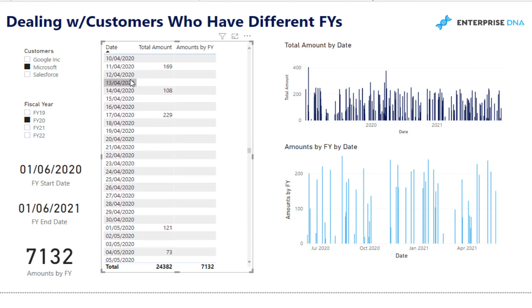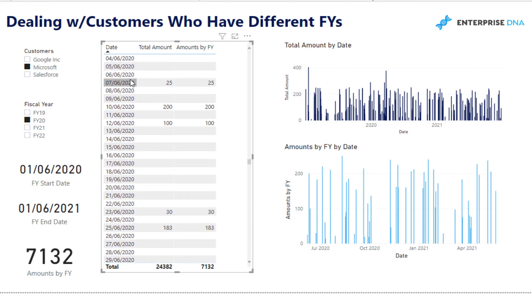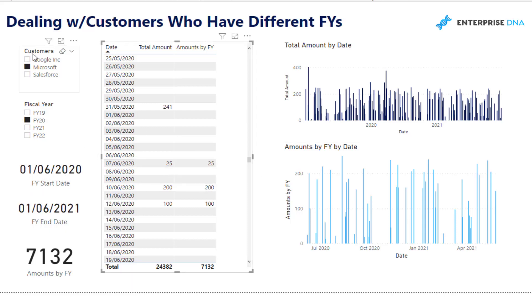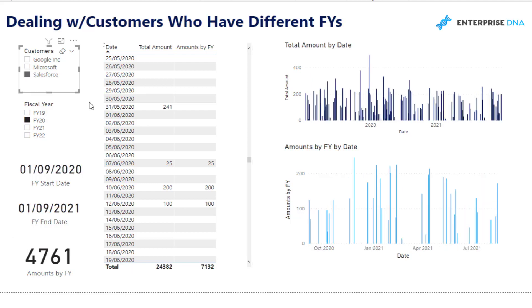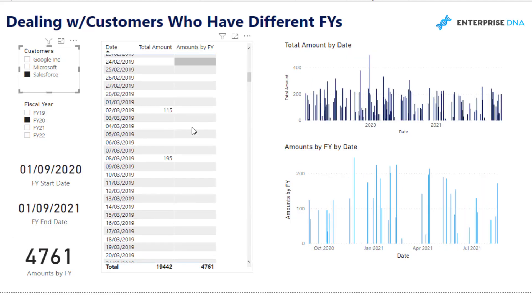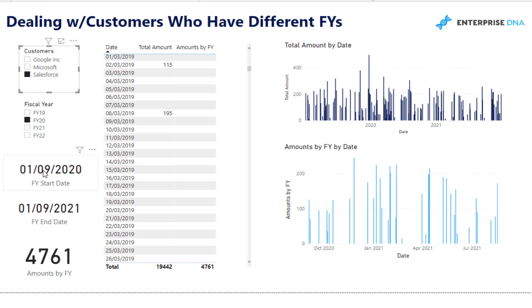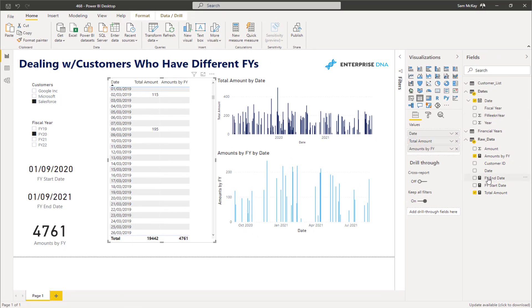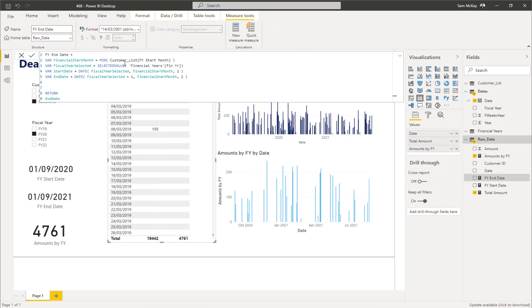Scrolling down just to show what we're trying to do — the very first data point within this particular month is on the 7th of the 6th, so in that financial year it's 25. But if I change the customer, you'll see the dates change as well. The financial year start date is now the 1st of September because that is the start date for Salesforce's financial year in this example.